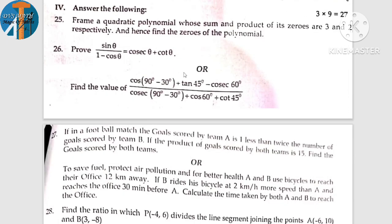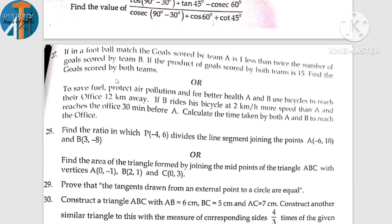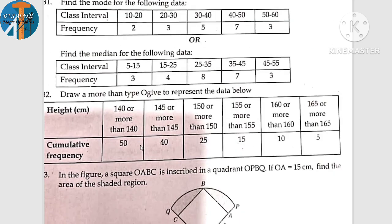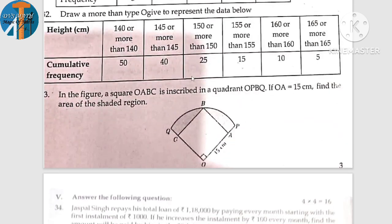Next we have polynomials: sum of zeros, product of zeros. Sum of zeros is minus b by a, product of zeros is c by a. But quadratic polynomial frame, zeros to find out. Next we have proving, circle theorems, construction of triangle median related, more than OGV. Area of shaded region I have discussed, same to same figure.